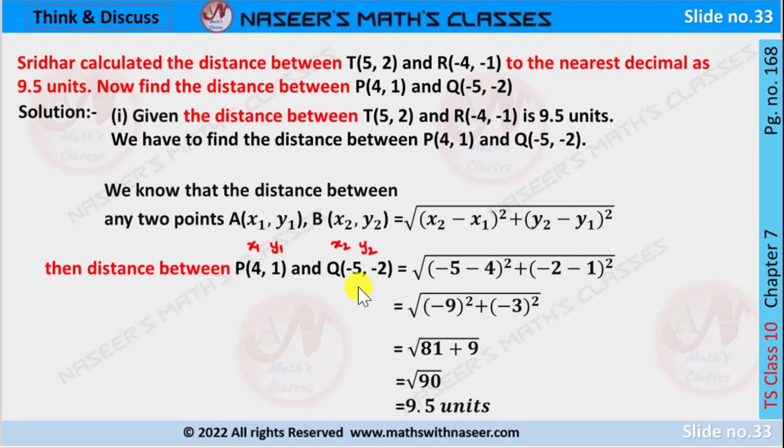Now we have to find the distance between points P and Q, that is P(4, 1) and Q(-5, -2). Here the coordinates are: x₁ is 4, y₁ is 1, x₂ is -5, y₂ is -2.